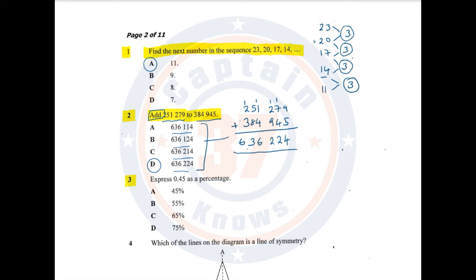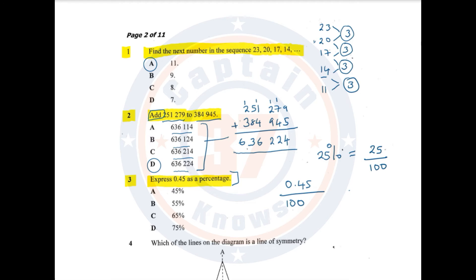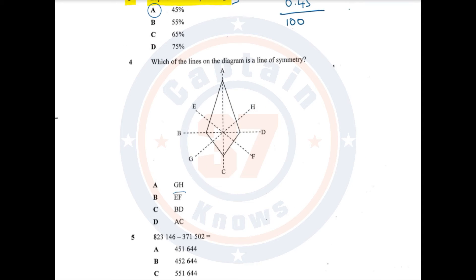Question number 3. Express 0.45 as a percentage. A percentage is any number — for example, if I say 25%, what I mean is it is 25 over 100. In this particular question, 0.45 multiplied by 100 gives 45%. And the answer is A.